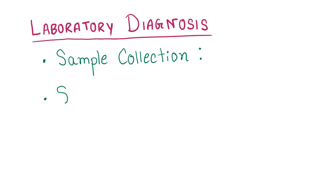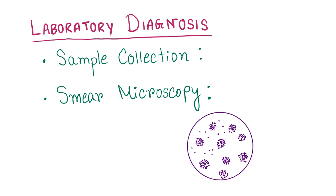The second point is direct smear microscopy. Gram staining of pus or wound swab reveals pus cells with gram-positive cocci in clusters. However, direct smear microscopy is of no value when Staphylococcus aureus is a part of normal flora in the sample. As shown in the picture, there are clusters of Staphylococcus aureus as seen under light microscope.